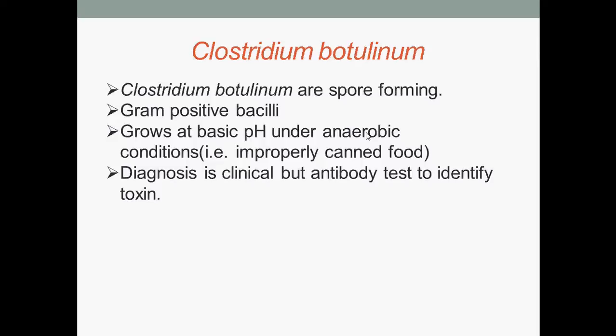The next bacterium is Clostridium botulinum. Clostridium botulinum are spore formers, gram-positive bacilli, and grow at basic pH under anaerobic conditions — for example, in improperly canned food. Diagnosis is clinical, but an antibody test is done to identify the toxin.